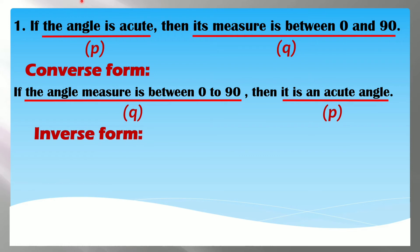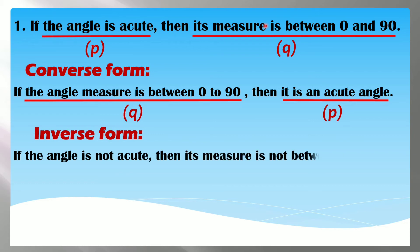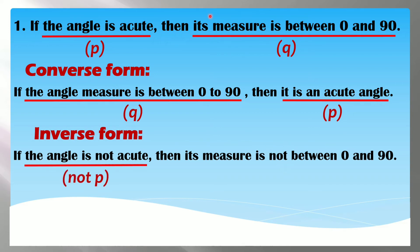And then kapag inverse form, i-ne-negate lang natin o i-co-contradict lang natin yung if-then — maglalagay lang tayo ng word na 'not' dito at dito. Pwede rin kayong gumamit ng 'no,' depende sa ating statement. So ang inverse: if the angle is not acute, then its measure is not between 0 and 90. May word na tayong 'not' — not P, not Q.